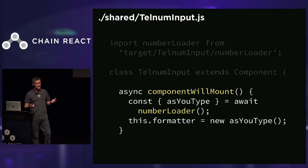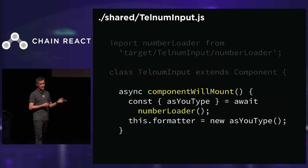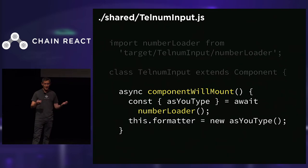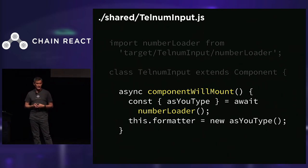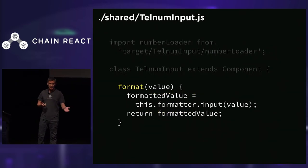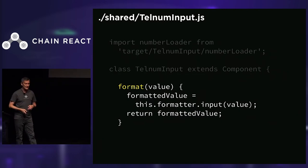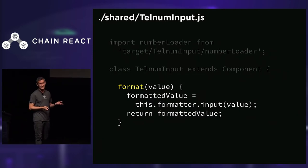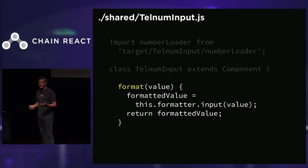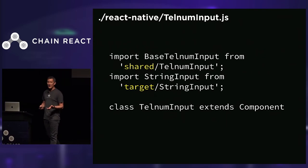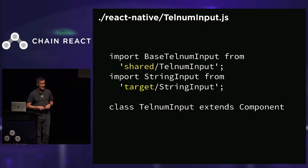Now we implement some functions in our shared implementation. We have a componentWillMount that creates an instance of the number loader we just imported. Then we make a helper function called format — this is called from our platform-specific components and returns a formatted version of the text as a telephone number. That's it for our shared business logic. This is a simple example, but now it's time to make our React Native implementation.